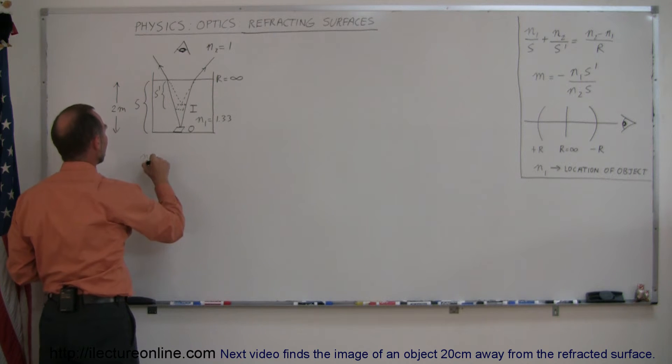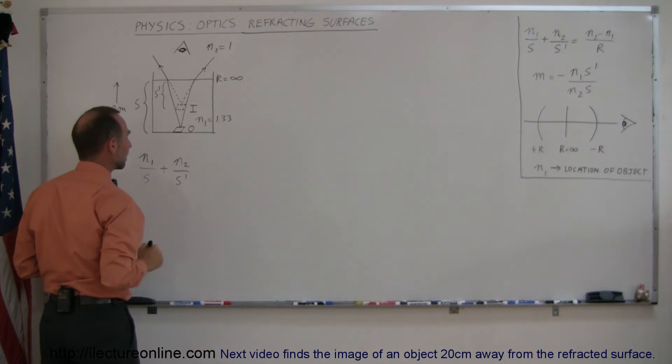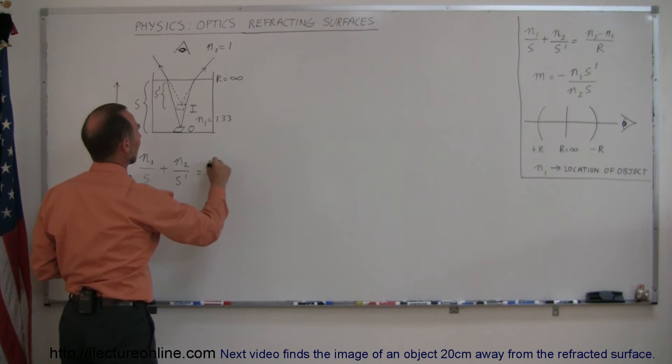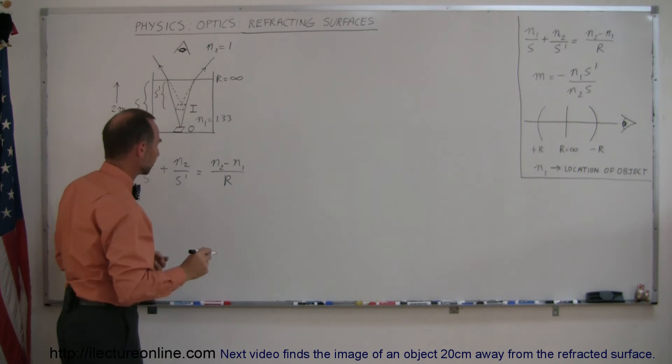We can say N1 over S plus N2 over S prime equals N2 minus N1 over the radius of curvature.